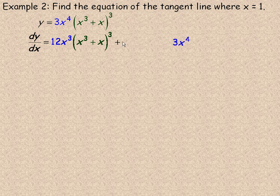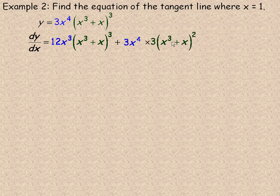Plus, and then the 3x to the 4th, the original first function, times the derivative of the second. Now here's the composite function, power of a function. And so I'll use chain rule here. So the outside function is 3, so the 3 comes down in front.